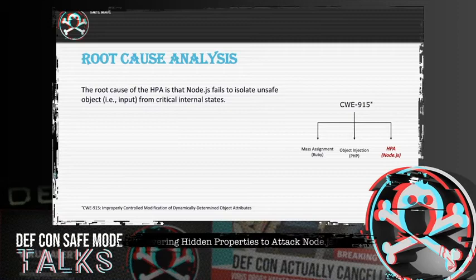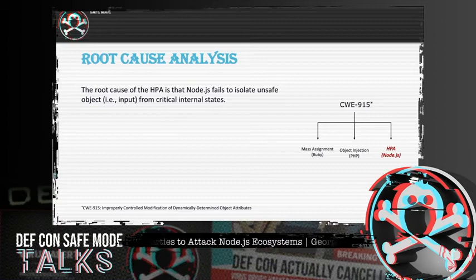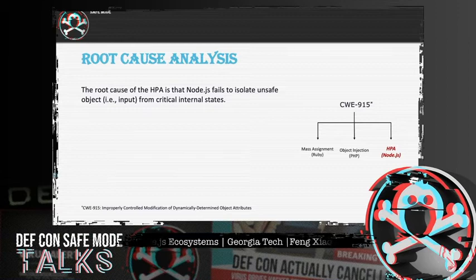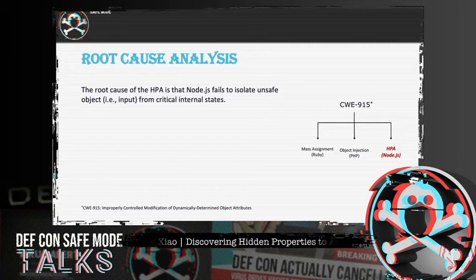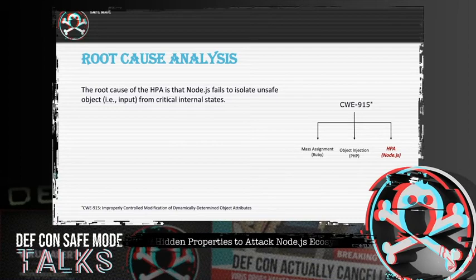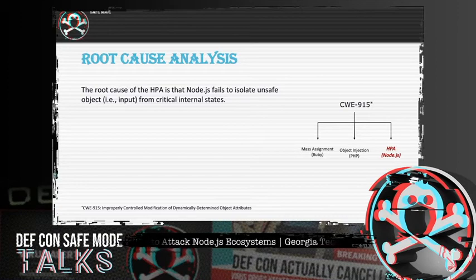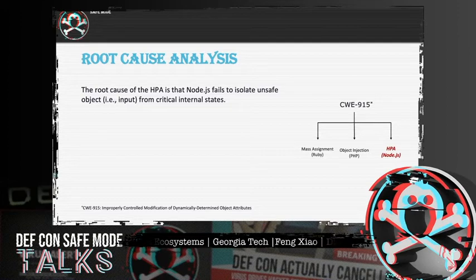The root cause of HPA is that Node.js fails to isolate unsanitized objects, such as user input, from critical internal states. To make a clear classification, HPA can be seen as a new security risk under the common weakness category CWE-915, whose child variants are all about improper modification of dynamic object attributes. As shown in the hierarchy tree, there are similar issues on other language platforms such as Ruby mass assignment and PHP object injections. Although these variants share the same behavior features dominated by CWE-915, they all have their own data patterns due to language differences.